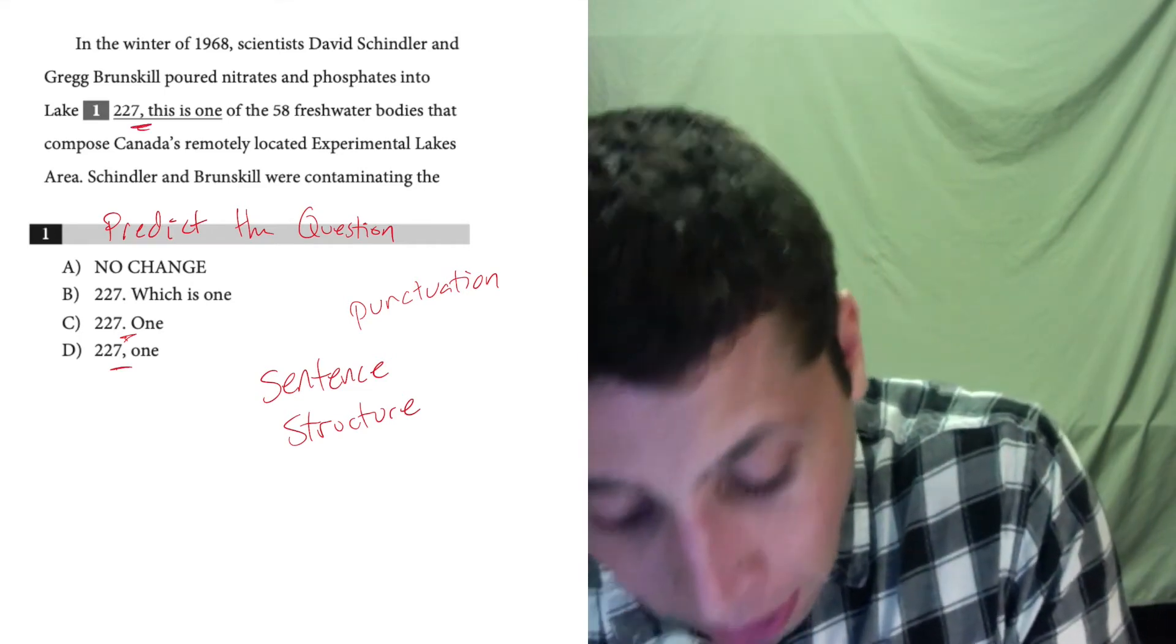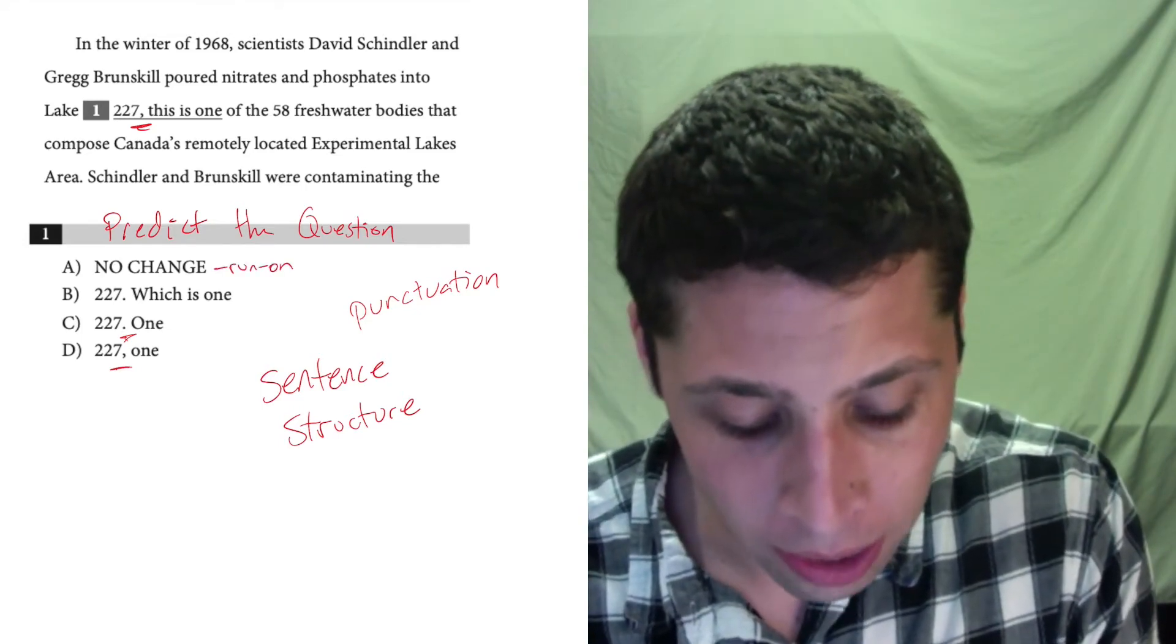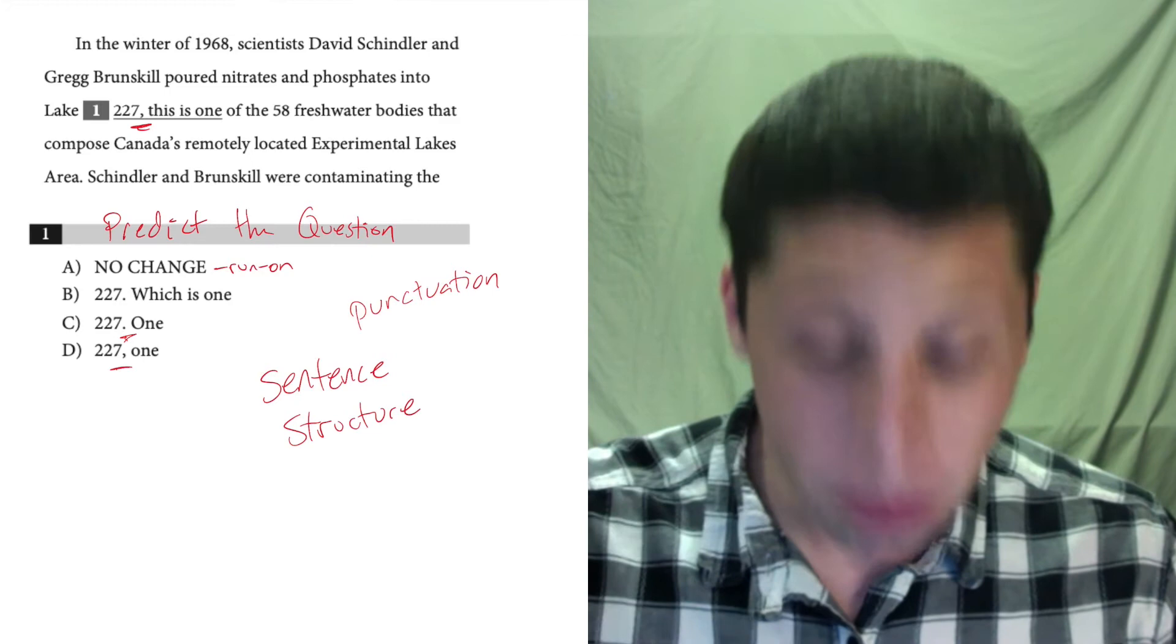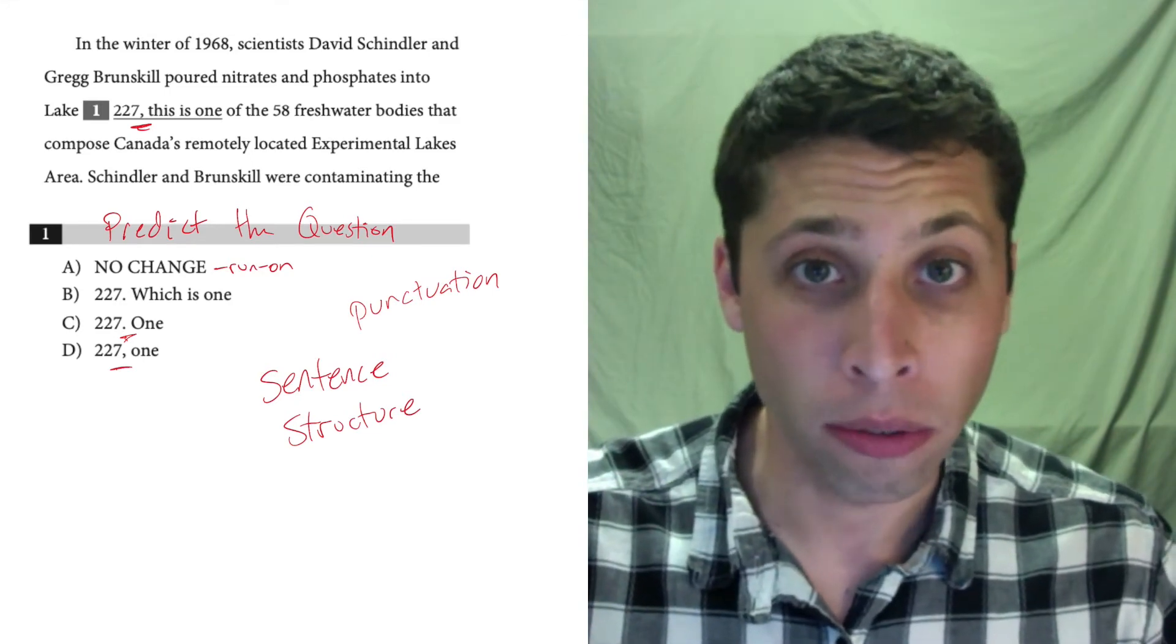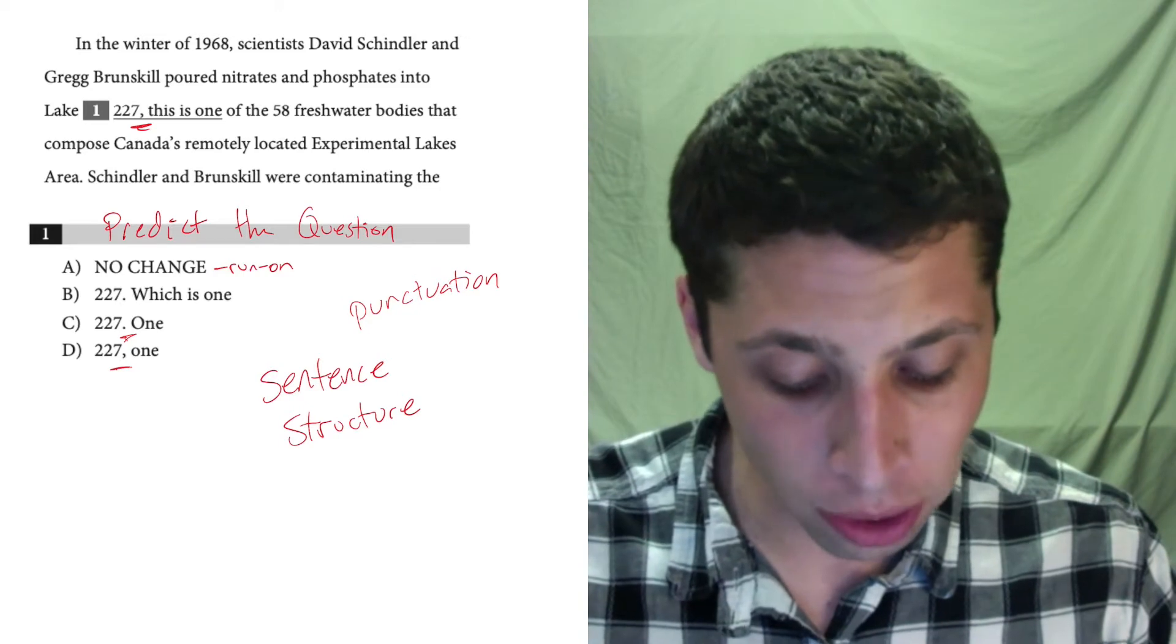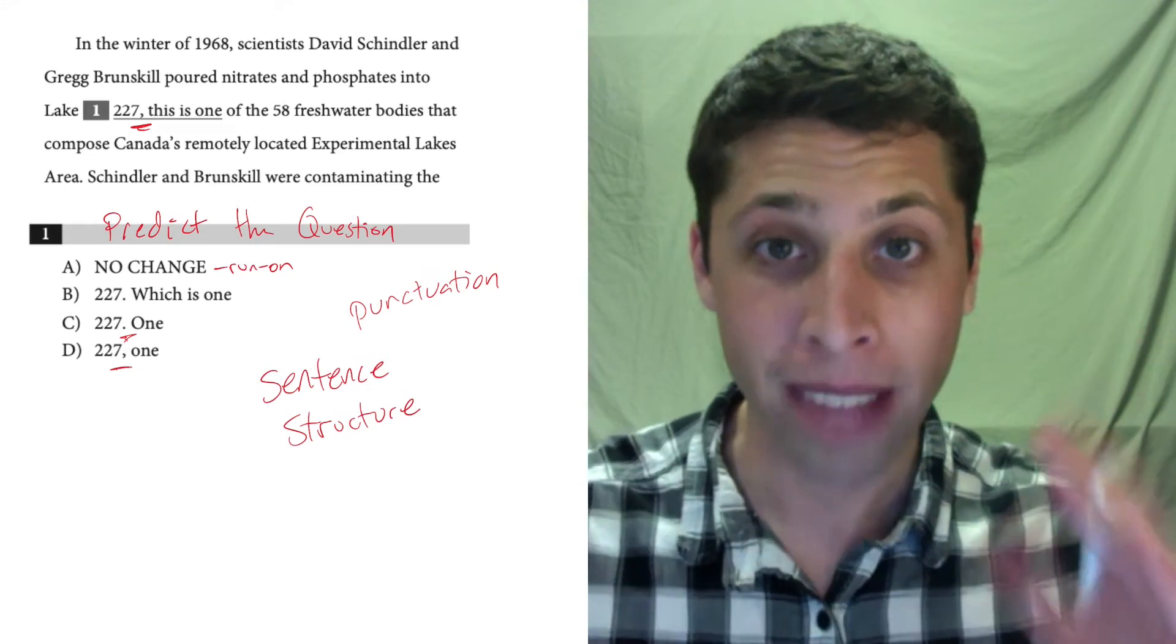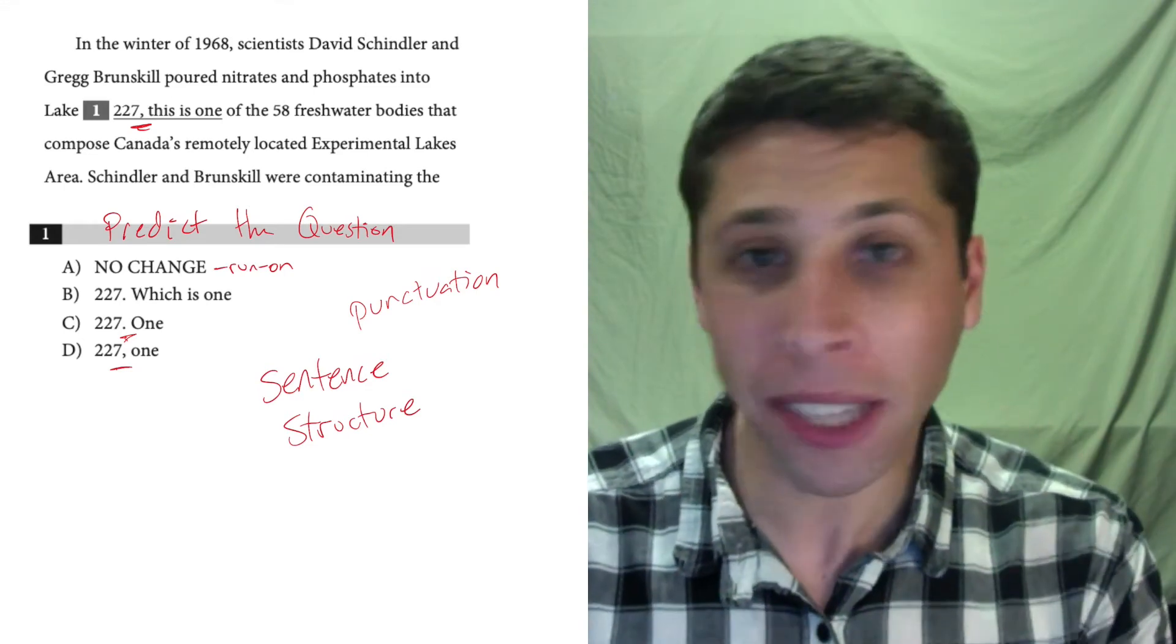This comma here is causing a big problem. This is a run on sentence. The first piece is a sentence that could stand alone. Listen again. In the winter of 1968, scientists David Schindler and Greg Brunskill poured nitrates and phosphates into Lake 227. That's a thought. I could end it right there with a period.